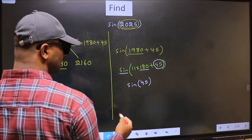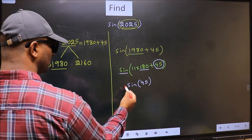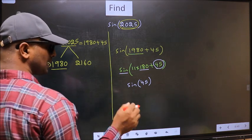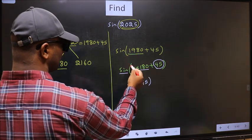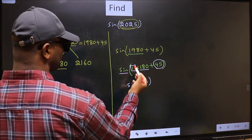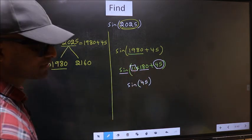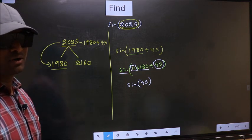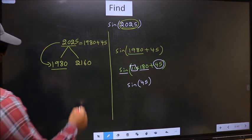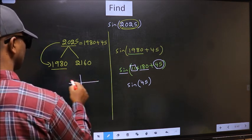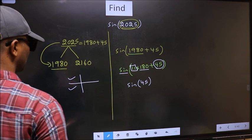Now the question is: will we get here plus or minus? To answer that, we should look at the number before 180. That is 11, and 11 is odd. All the odd multiples of 180 lie either in the second or in the third quadrant.